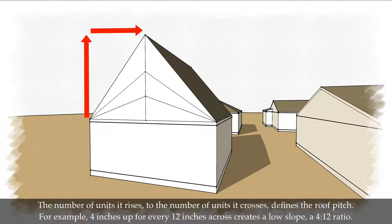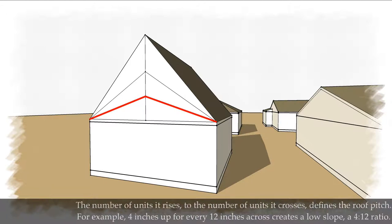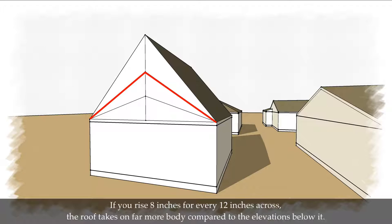The number of units it rises to the number of units it crosses defines the roof pitch. For example, 4 inches up for every 12 inches across creates a low slope, a 4 to 12 ratio. If you rise 8 inches for every 12 inches across, the roof takes on far more body compared to the elevations below it.